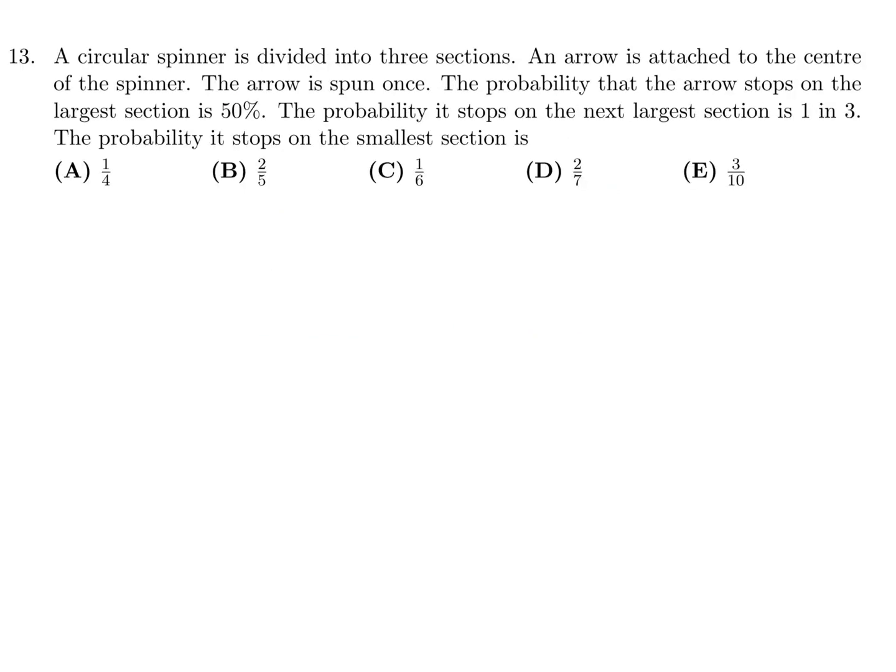A circular spinner is divided into three sections. An arrow is attached to the center of the spinner and is spun once. The probability that the arrow stops on the largest section is 50%, the next largest section is 1 third, and the probability it stops on the smallest section is what?